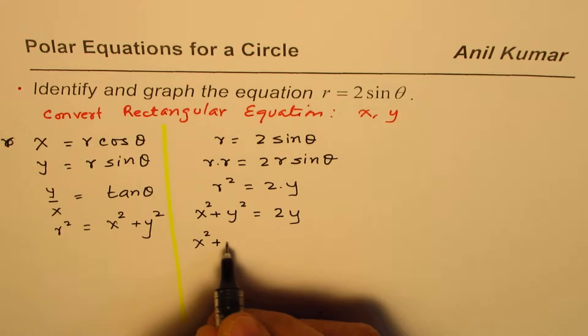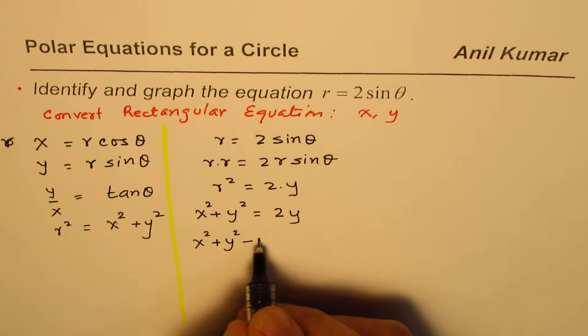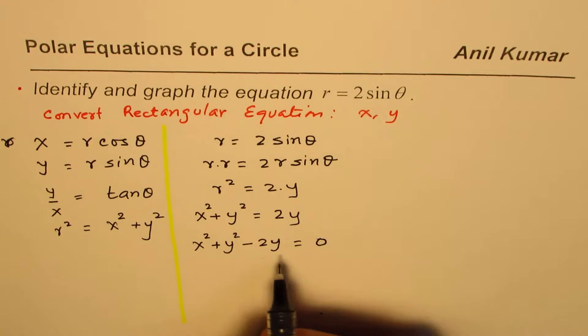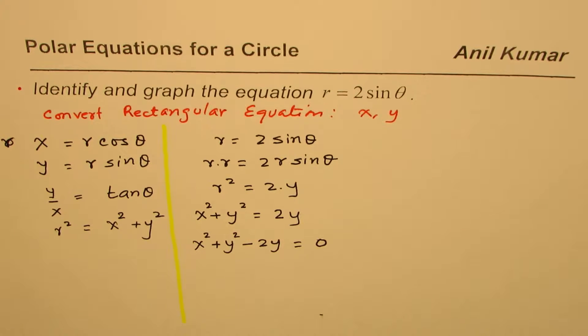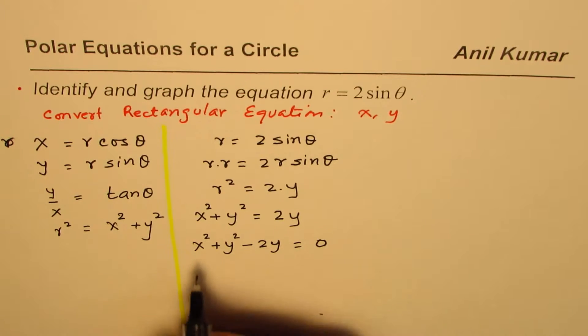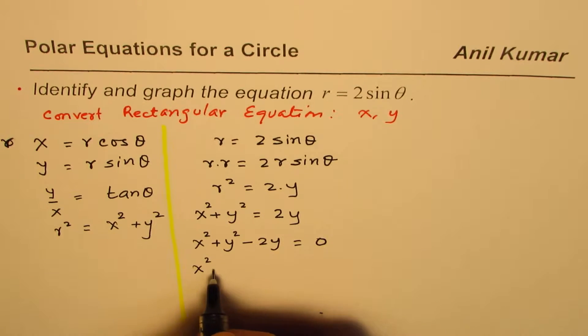Now we can bring this y to the left side. So we get x square plus y square minus 2y equals 0. At this stage some of you must remember this completing the squares method. Let's complete the squares for y square minus 2y.